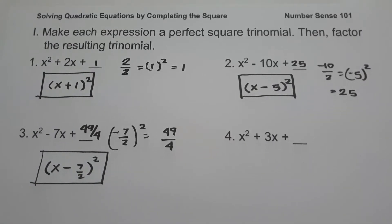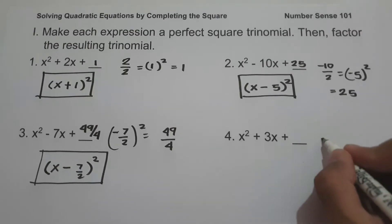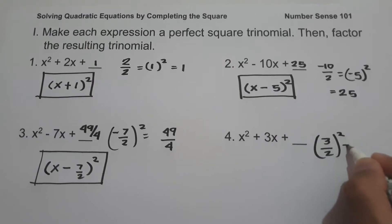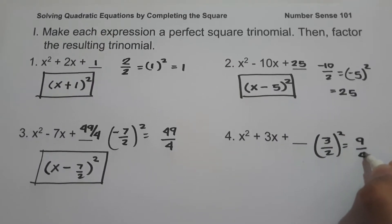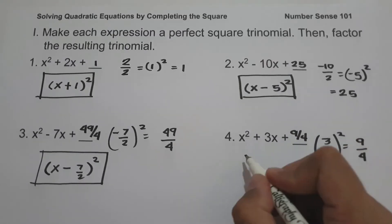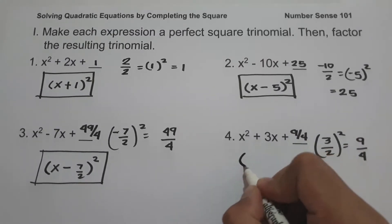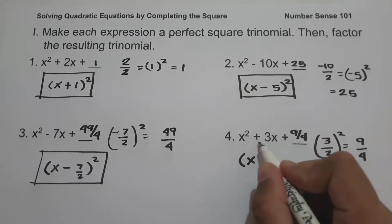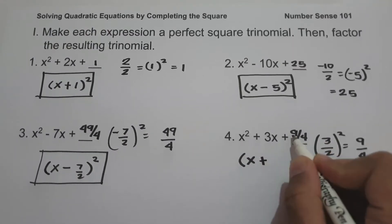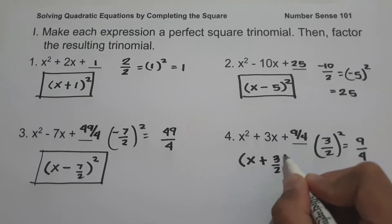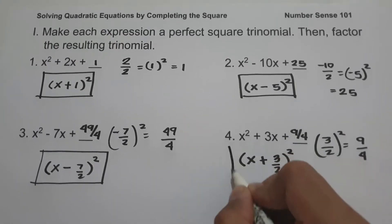On number 4, we have x squared plus 3x plus blank. Let us have 3 divided by 2, then square, that is 9 over 4. So we are going to add 9 over 4 to make this expression a perfect square trinomial. To factor this, the square root of x squared is x, the sign of the middle term is positive, the square root of 9 over 4 is 3 over 2, and then square. This will be our answer.